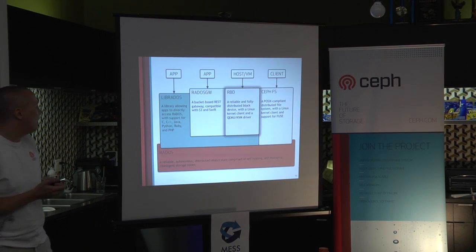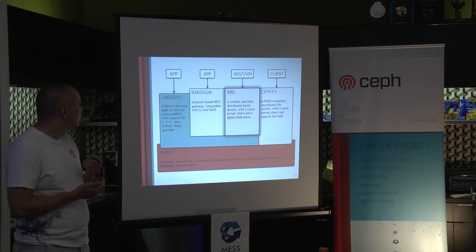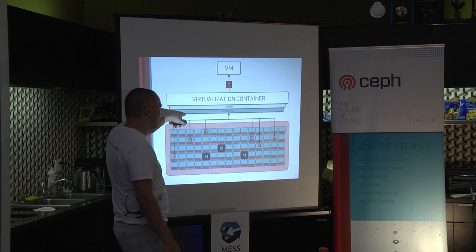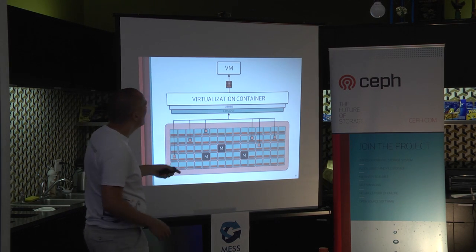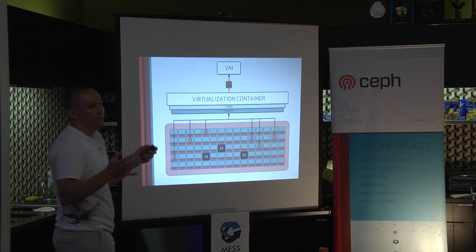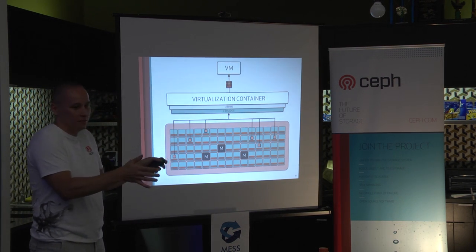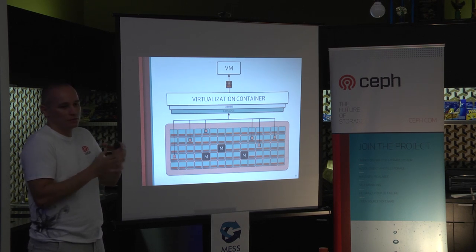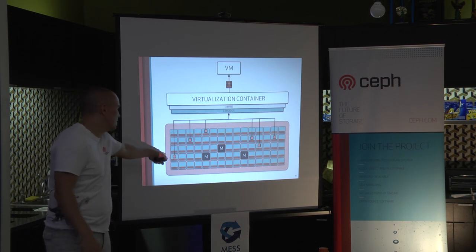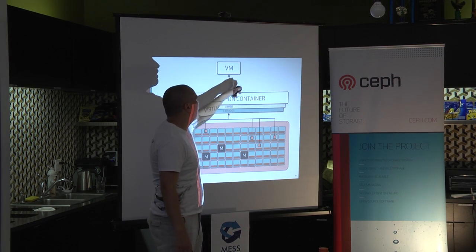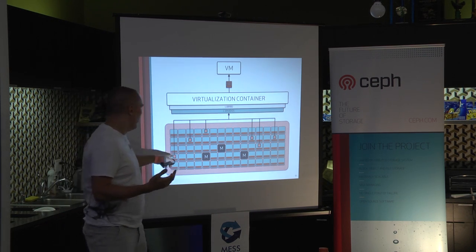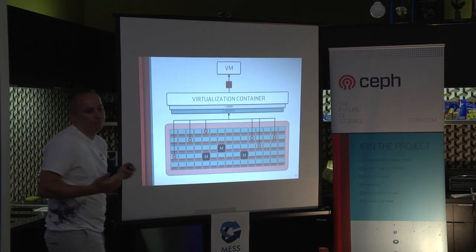The next thing is RBD — RADOS Block Device. You have some sort of virtualization container, for example KVM or Xen, which uses LibRBD, which uses LibRADOS, and actually stores things as objects. Your disk that the virtual machine thinks is real — you can make it show up as SCSI — and it completely fools the system into believing it is an actual physical disk. It is divided into chunks; the default chunk size is 4 megabytes but that is configurable. Each chunk is stored in a separate object in a separate location all over the cluster.